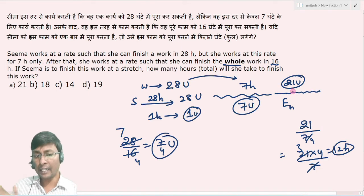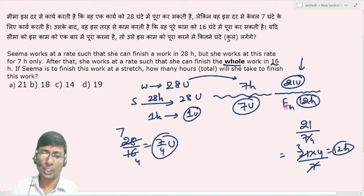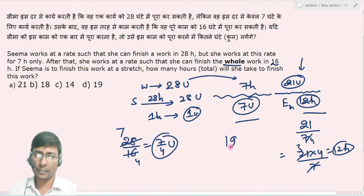That implies next case में 21 unit को काम करने के लिए Seema कितना time लगे? 12 hours का. तो total time इसको कितना लगेगा? यह 7 और यह 12, that implies 19 hours का. और हमारा answer क्या होगा? Option number D.